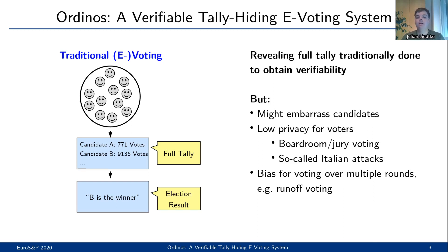Moreover, some elections have several rounds — in particular, they might involve runoff elections. In order to get unbiased voters' opinions, one might not want to reveal intermediate election tallies, except for the information which candidates move on to the next election round. These examples illustrate that, for some situations, it is desirable to not publish the full tally as part of the tallying procedure, but to only publish the election result, like only the winner of an election, without the exact vote counts.